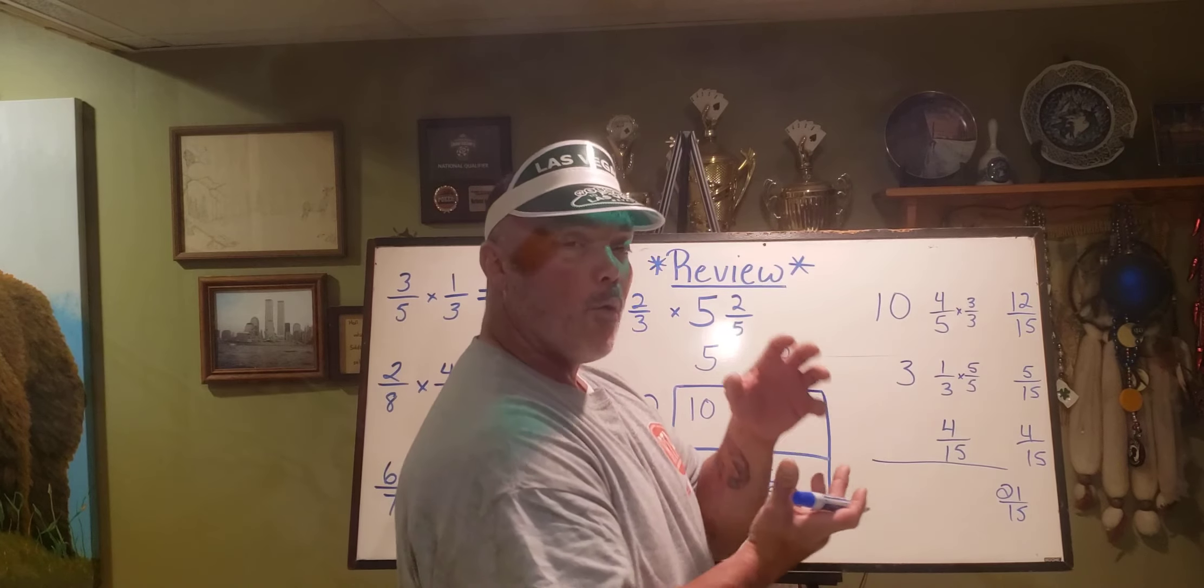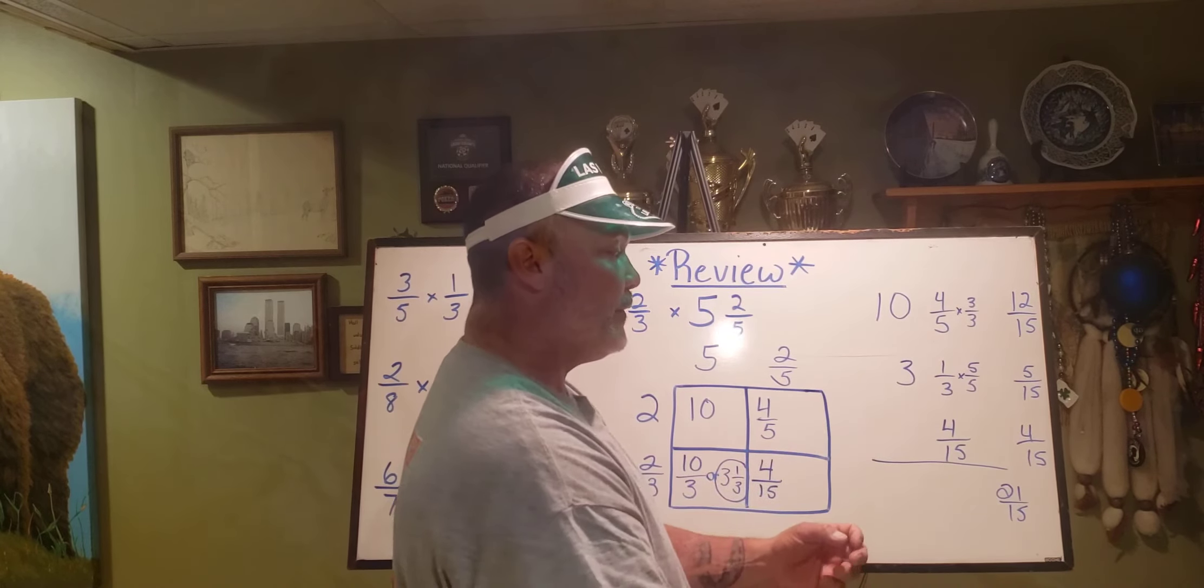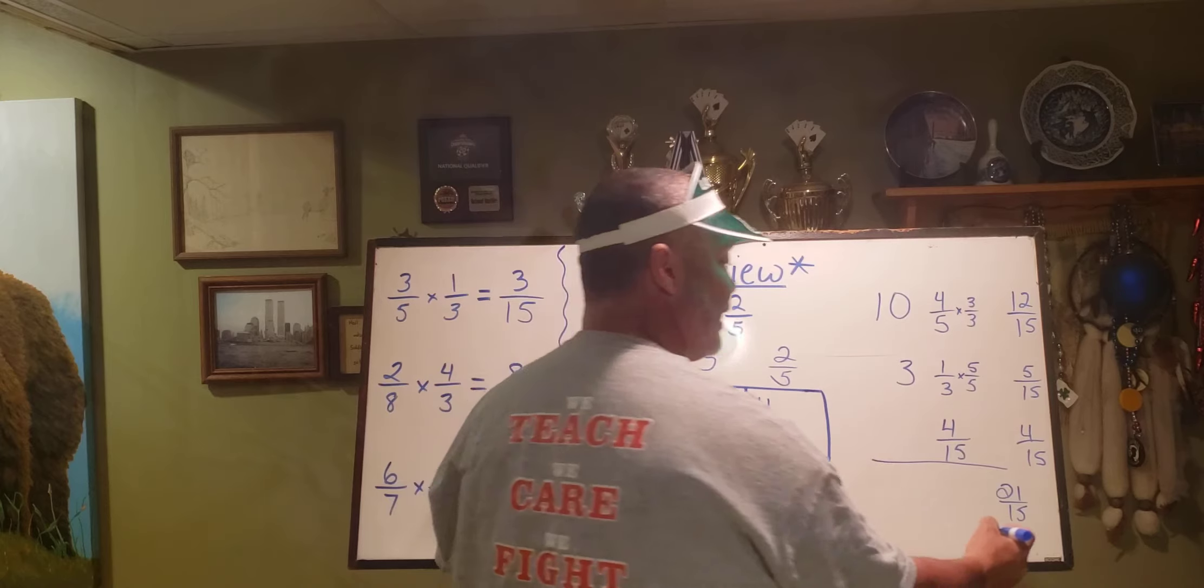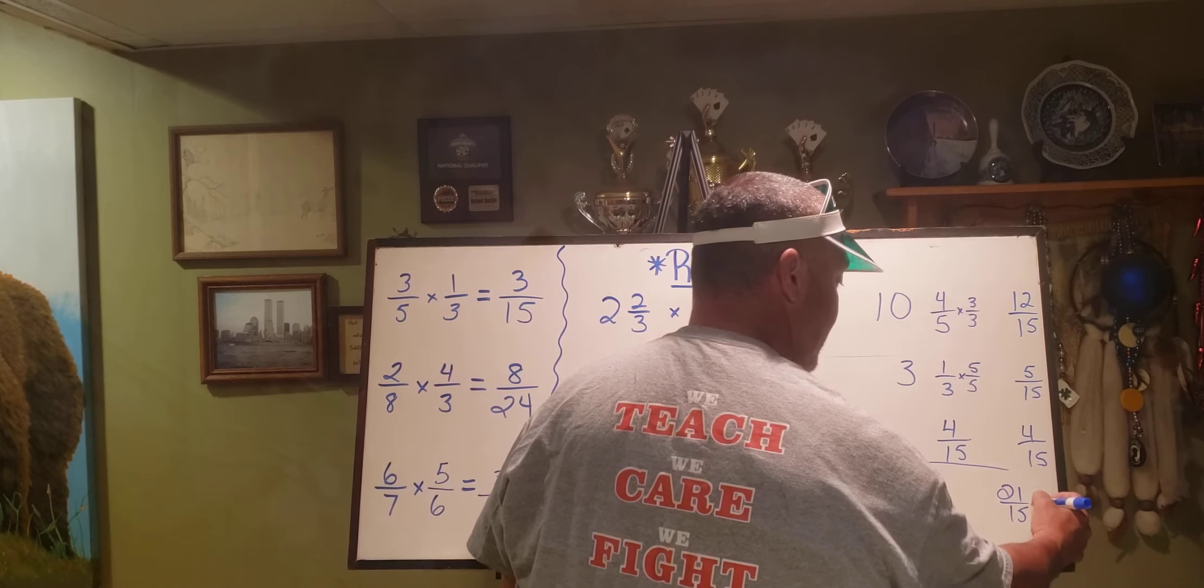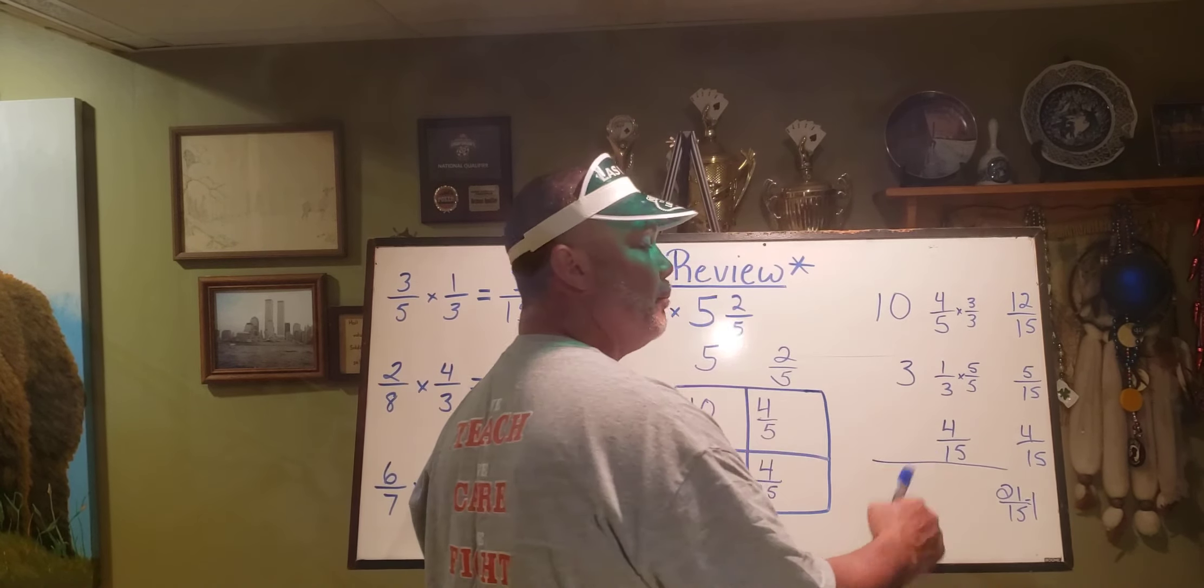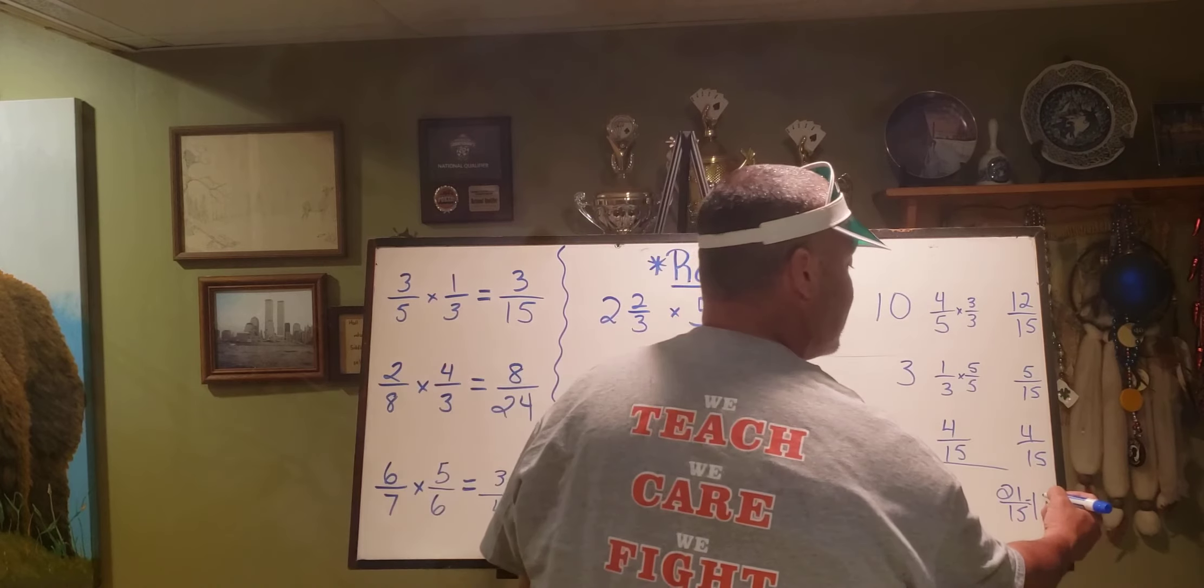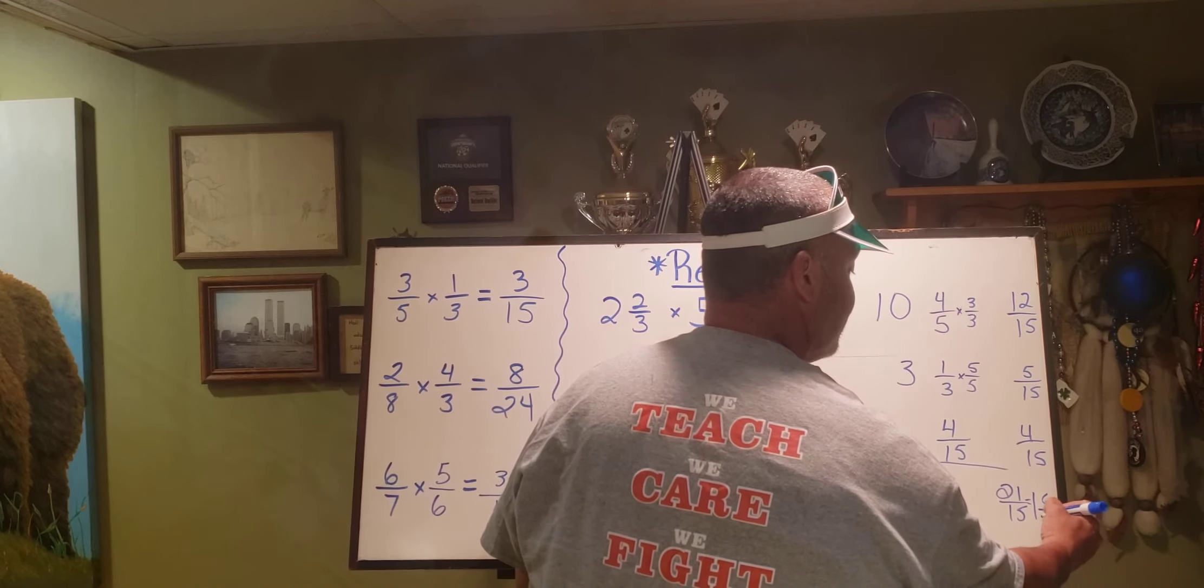I can take out one group of fifteen over fifteen. So I would subtract it, that would give me one. And then twenty-one minus fifteen is six. So that's six fifteenths.